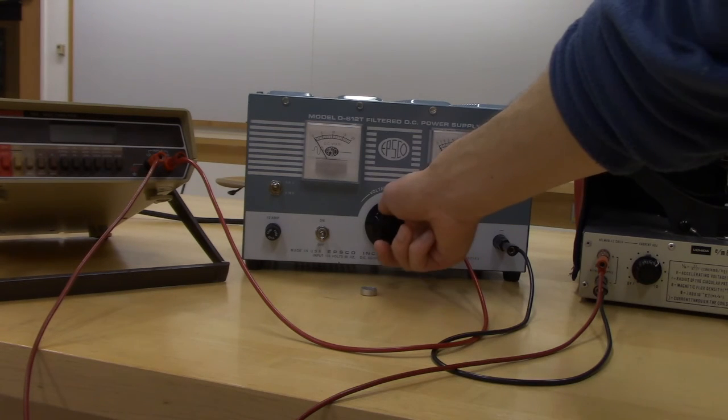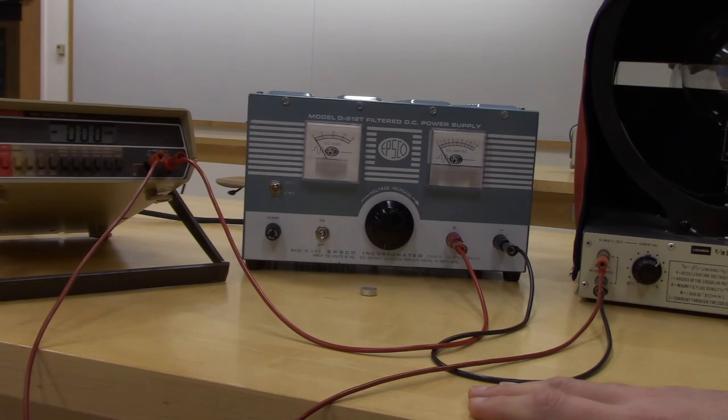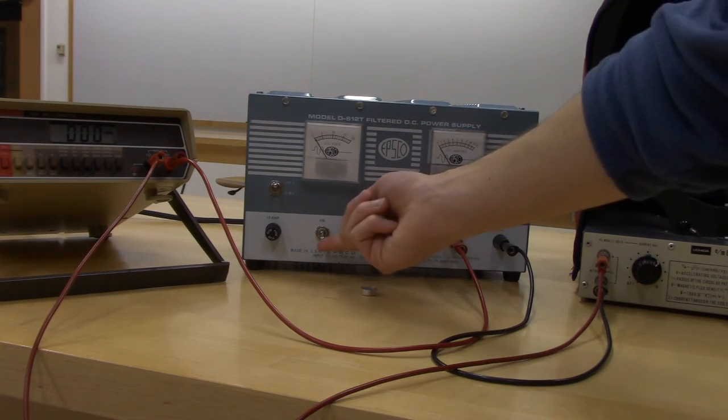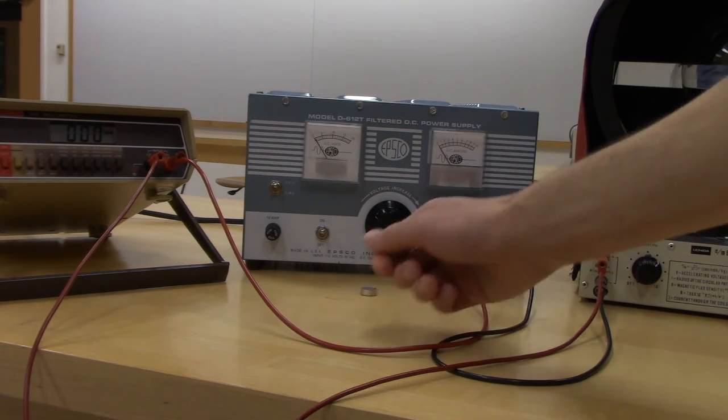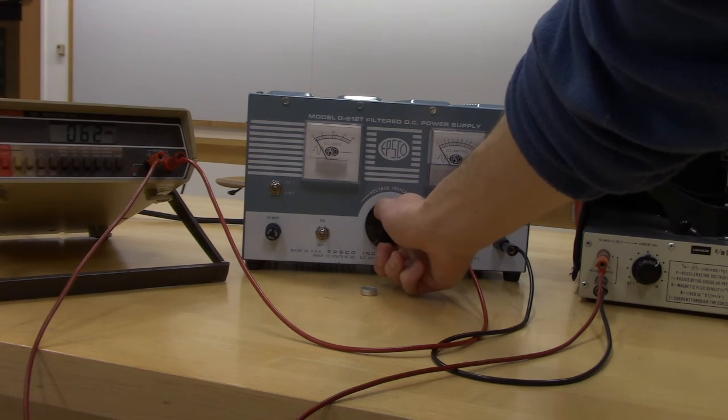The knob that I'll be using here is going to be to manipulate the current. You'll see as I turn the power supply on, as I turn this knob you'll be able to see the current increase.